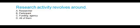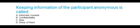Research activity revolves around: researcher, participant, funding agency, or all of them. The answer is all of them. Keeping information of the participant anonymous is called: informed consent, confidentiality, or none of them. The correct answer is confidentiality.